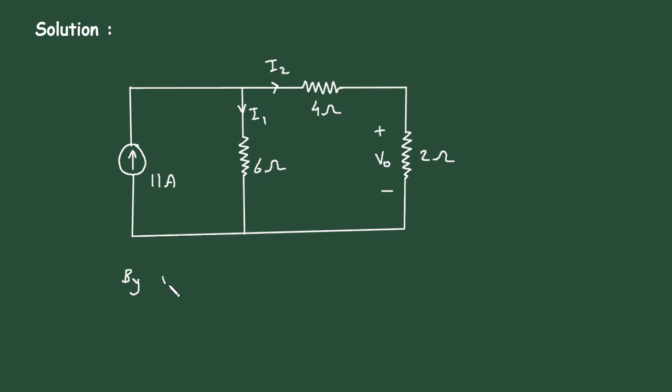By using current division rule, I2 is equal to this current, that is 11 ampere, multiplied by opposite branch resistance. The opposite or parallel branch to this is 6 ohm.